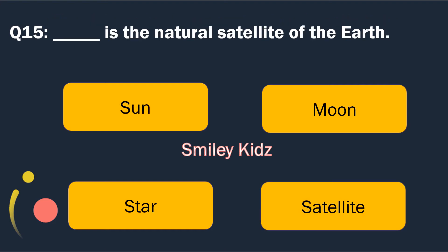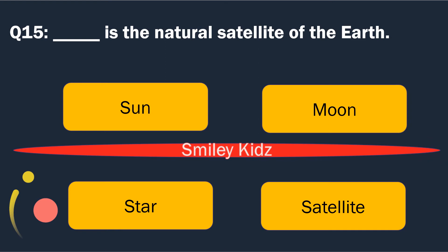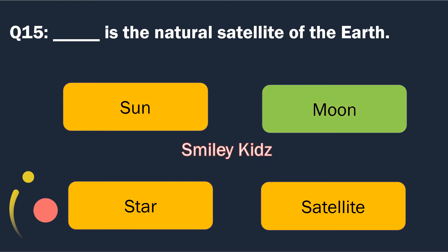Question number 15. Blank is the natural satellite of the earth. Options are: Sun, Moon, Star and Satellite. The right answer is Moon. Moon is the natural satellite of the earth.